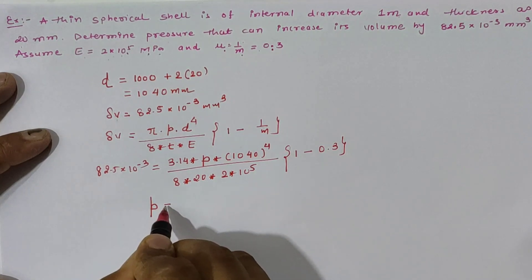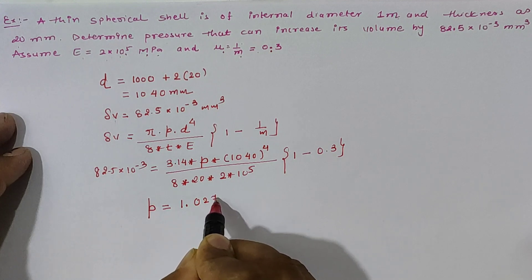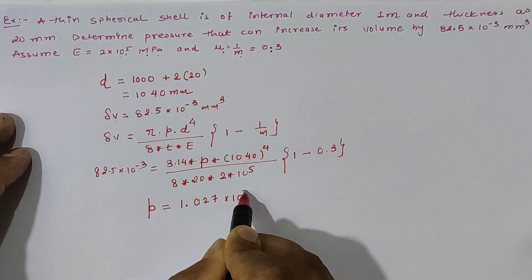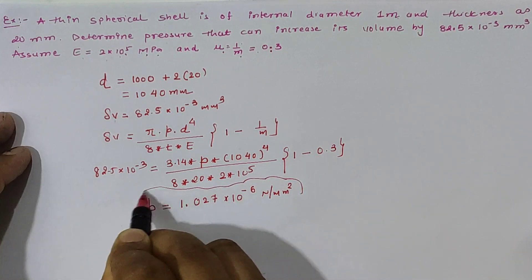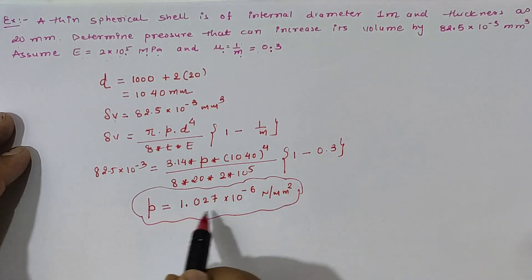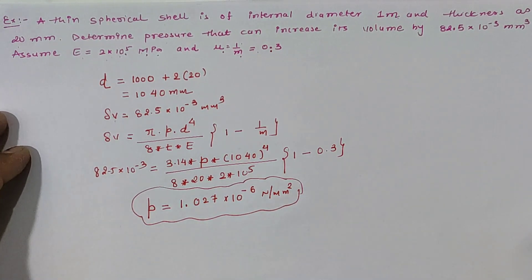Now solving this term, we have pressure value as 1.027 × 10^-6 in terms of N/mm². So according to the given data, we require the pressure value as calculated in the example. Thank you.